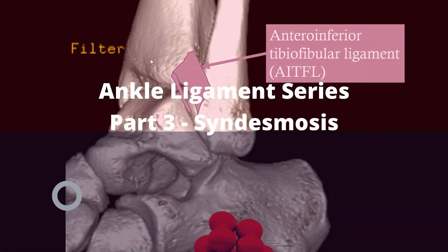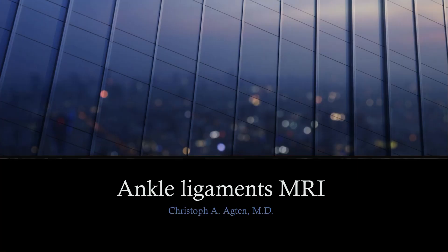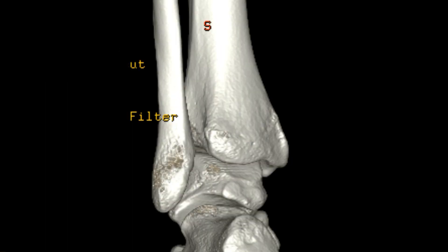In this video, part 3 of the ankle ligaments, we focus on the syndesmosis. The injury of the syndesmosis of the ankle joint is an important injury. It's commonly known as a high ankle sprain, as opposed to a normal ankle sprain, and it's important because these injuries of the distal tibiofibular joint have longer recovery times and longer return times back to play for athletes. So always give the syndesmosis a good look in every MRI you have in front of you.